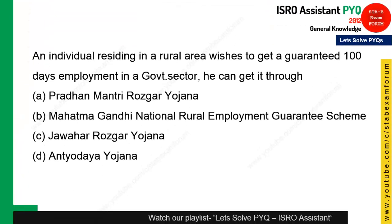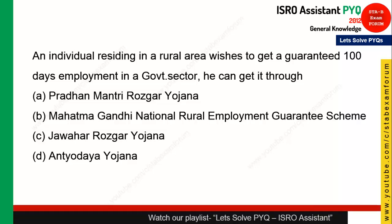The next question: an individual residing in a rural area who wishes to get guaranteed 100-day employment in the government sector can get it through which scheme? This is the popular scheme where the government gives 100-day guaranteed employment — MGNREGA, the Mahatma Gandhi National Rural Employment Guarantee Act.